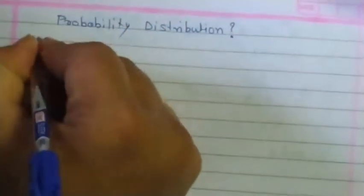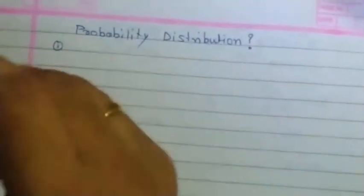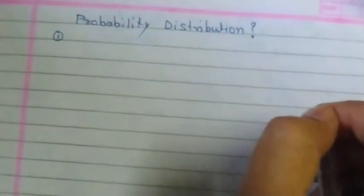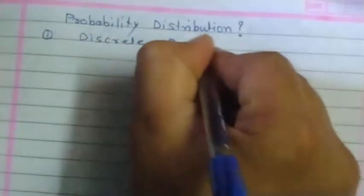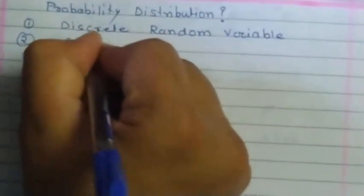What is meant by probability distribution? Before we go to probability distribution, I would like to first discuss the types of random variable. There are two types: one is a discrete random variable, and the second one is a continuous random variable.